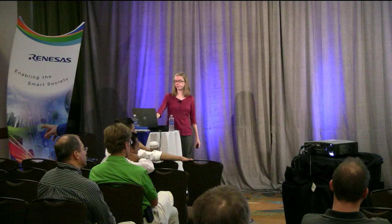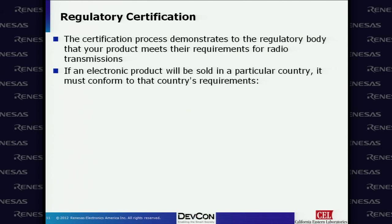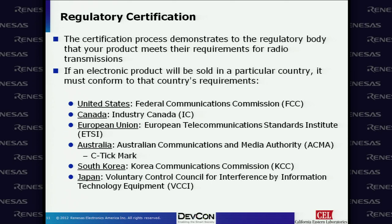The certification process demonstrates to the regulatory body that your product meets requirements for radio transmissions. If an electronic product will be sold in a particular country, it must conform to that country's requirements. In the United States we have the FCC; in Canada, Industry Canada; in the European Union, ETSI; in Australia, the ACMA with the CTIC mark; in South Korea, the Korea Communications Commission; and in Japan, the VCCI. All of these bodies guarantee that a shipped product meets their regulatory requirements for both emissions and susceptibility.